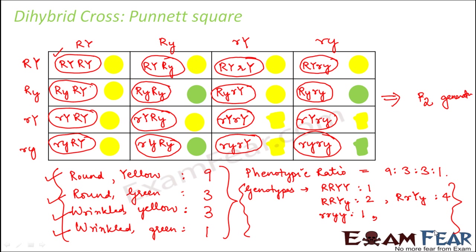So basically this is how a Punnett square actually helps when the cross is complicated. I hope that now you know how exactly you have to find out the result of a particular cross — how to find the phenotypic ratio and the genotypic ratio. This is how Mendel performed this dihybrid cross. And from this, one thing that it helped him confirm is his principle of dominance and principle of segregation. He felt that those two principles are right because they are even followed in a dihybrid cross.